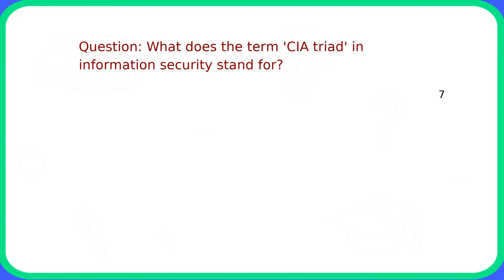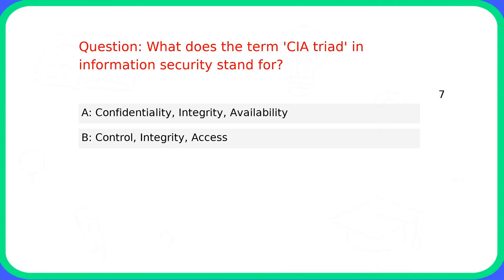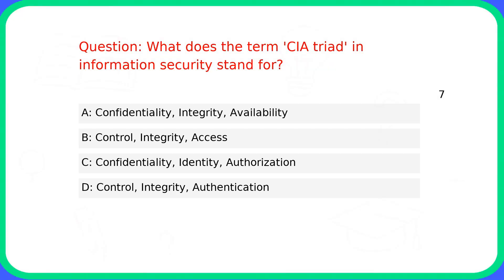Question: What does the CIA triad in information security stand for? Answer: A. Confidentiality, Integrity, Availability.